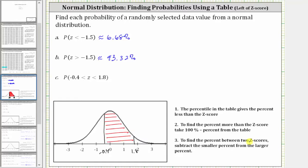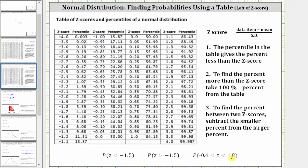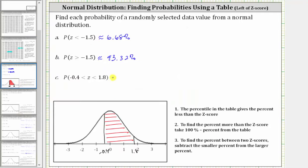To find the percent or probability between two z-scores, we subtract the smaller percent from the larger percent given in the table. Going back to our table, negative 0.40 is here — the probability to the left is approximately 34.46%. The z-score of 1.8 is here — the probability to the left is approximately 96.41%. So to find the probability between the z-scores, we subtract 34.46% from 96.41%, giving us approximately 61.95%.